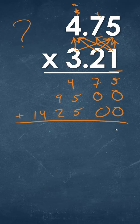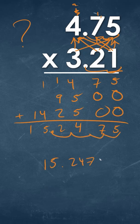We add all of these numbers up. Starting on the right, we'll get 5, 7, 14, 12, 5, and 1. We have 1, 2, 3, 4 decimal places, so 1, 2, 3, 4. So our answer is 15.2475.